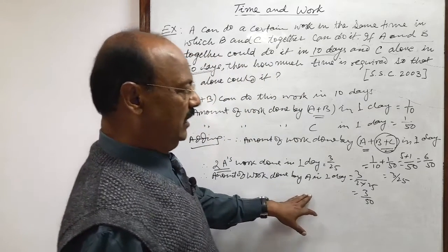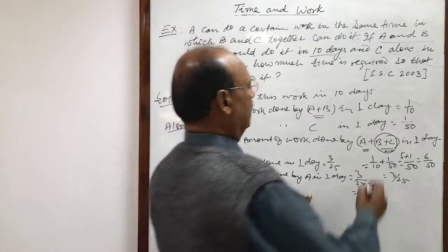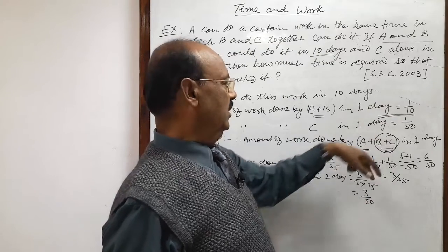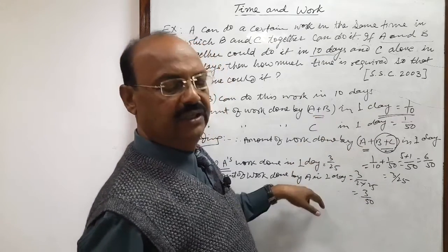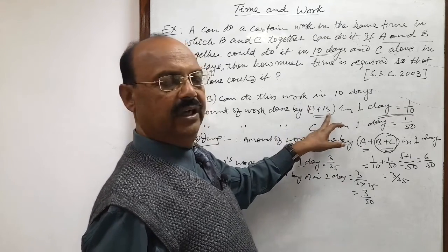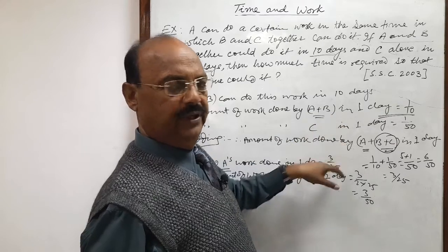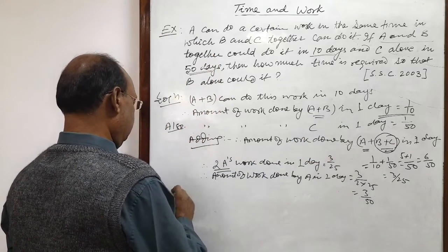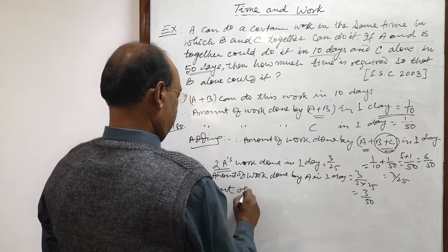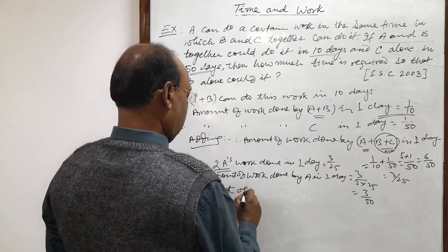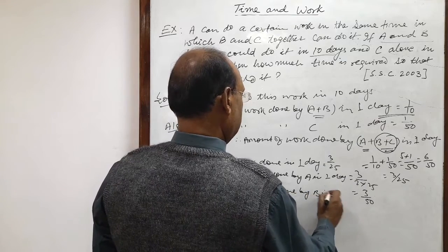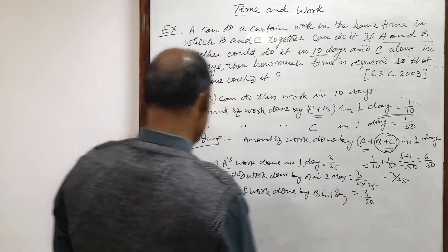So this is amount of work done by A and here we are having amount of work done by A plus B. So when we subtract these two quantities, we will get amount of work done by B. This is A plus B and this is A. When we will subtract, A will be cancelled out, we will get B, amount of work done by B. Therefore, again amount of work done by B in 1 day will be how much?